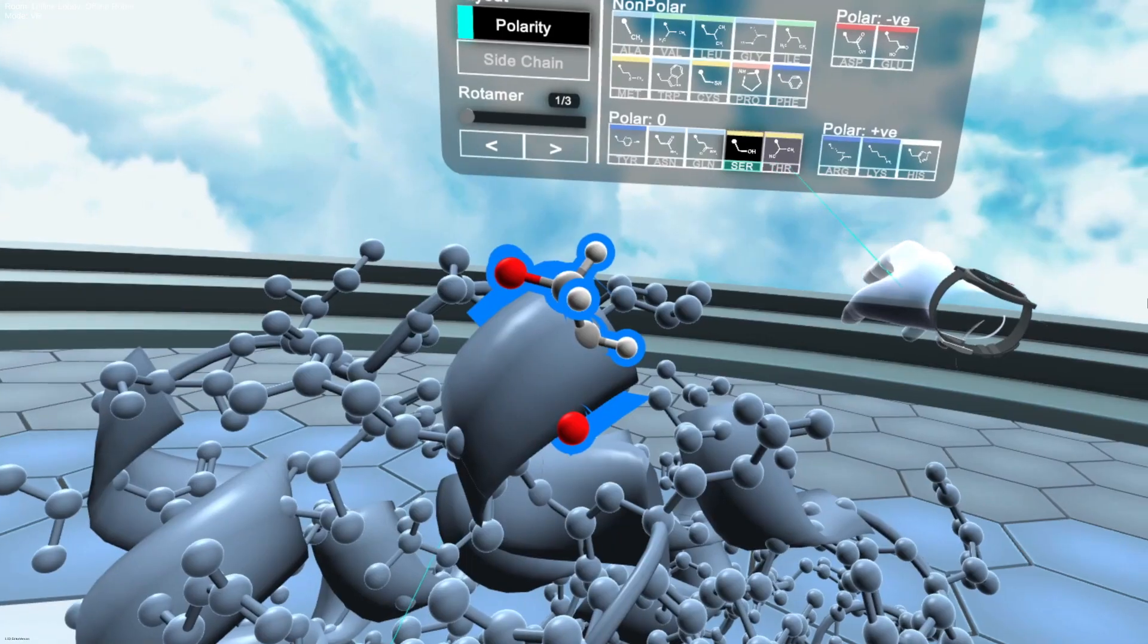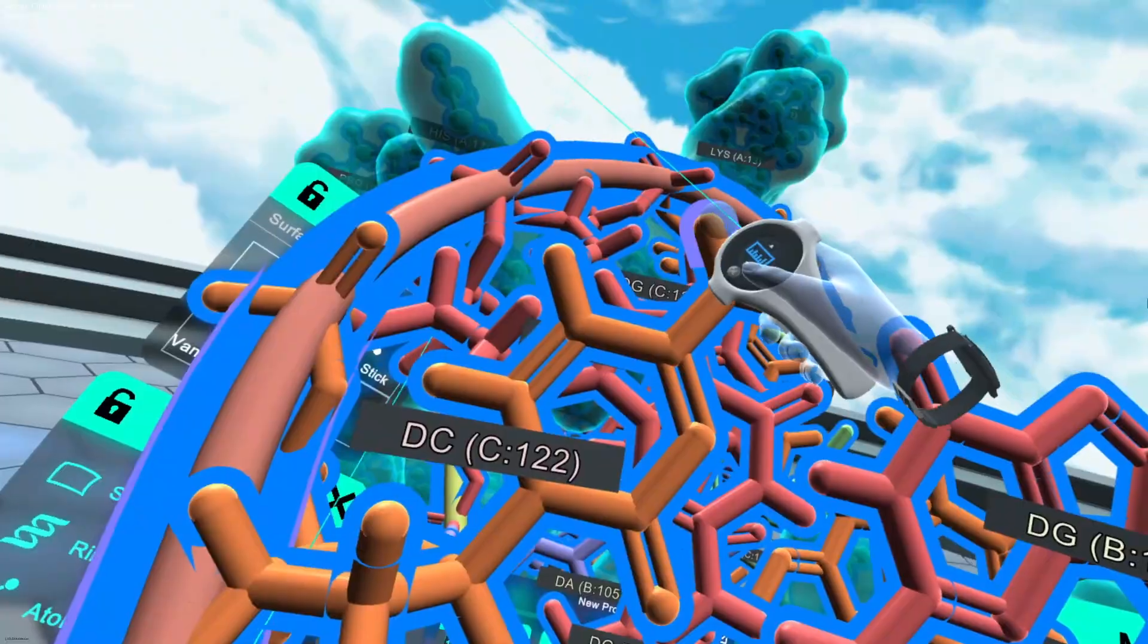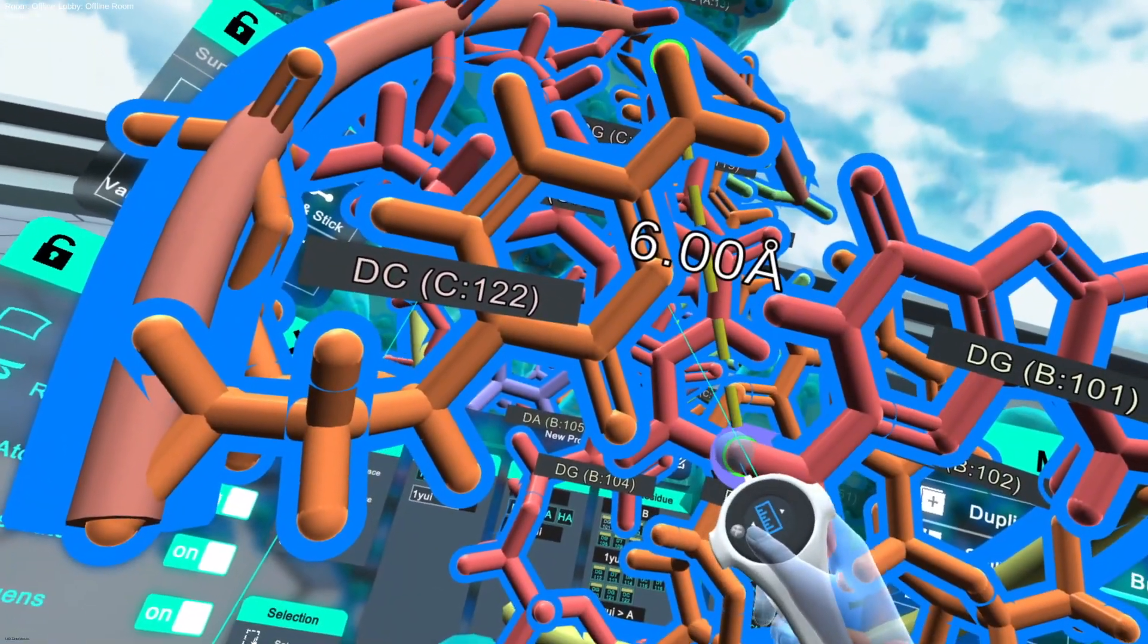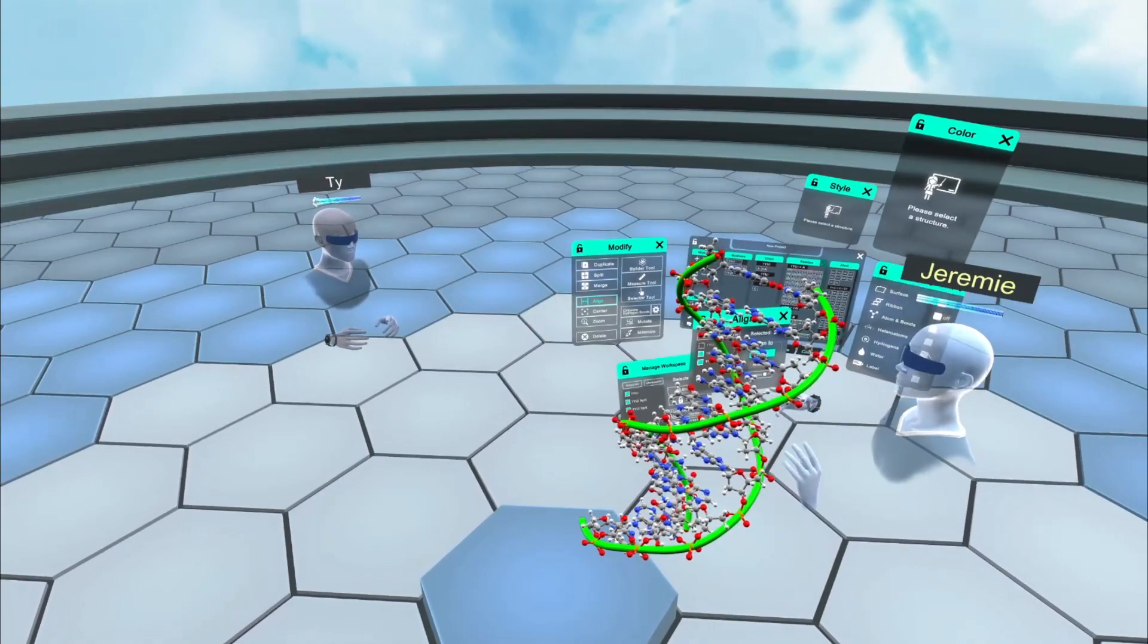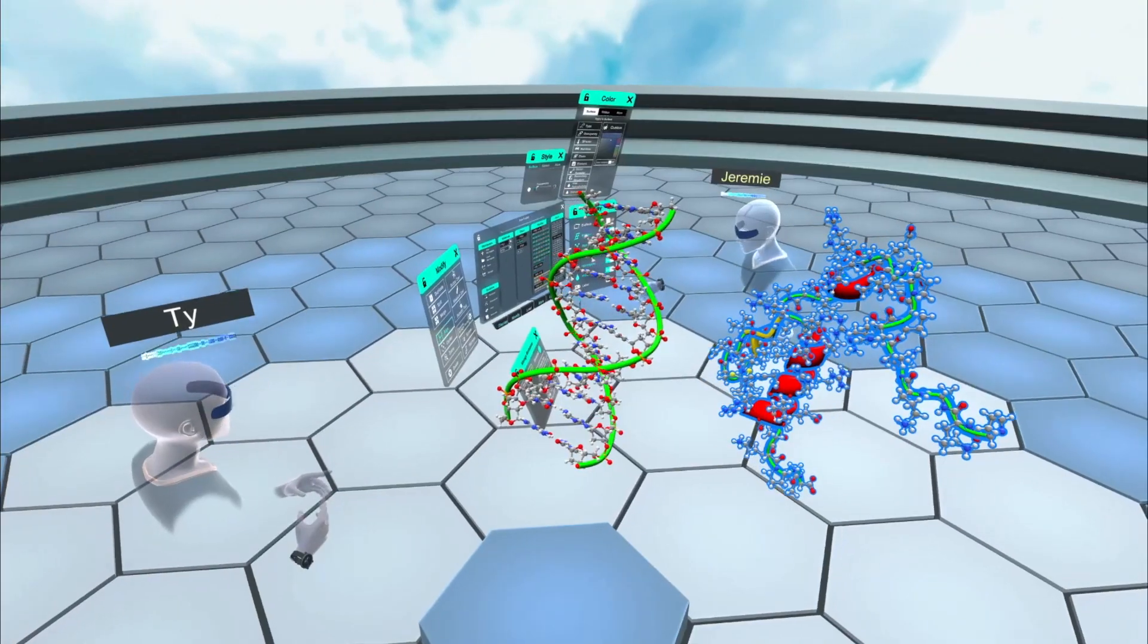Mutate atom by atom or by amino acids with the mutation menu. Select by reaching in and measure like never before. Even take a selfie with your design, build with a friend or with random strangers.